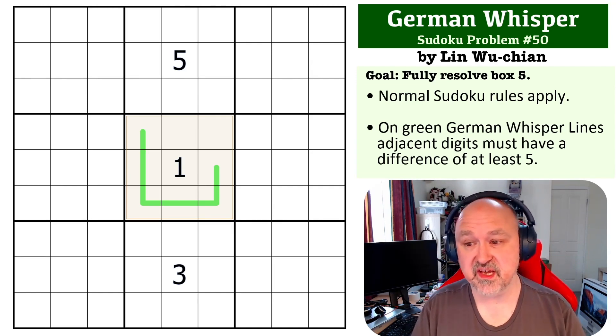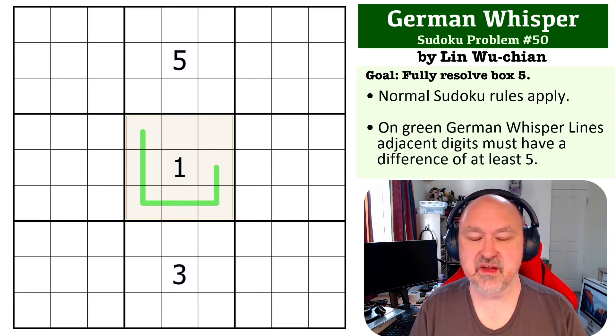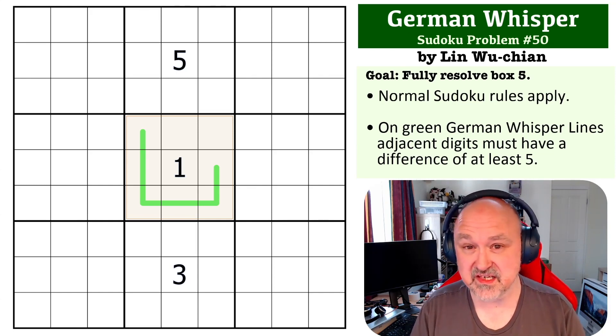So this is problem number 50, German Whisper. This one is by Ling Wu Chain. It's just easier to track, and it's just going to be easier for people, I think. They can just track what number am I up to. I think it will just be easier overall, and it definitely is for me for admin.